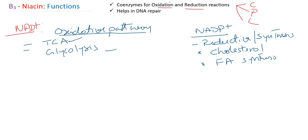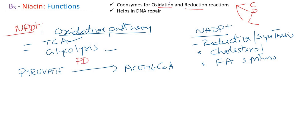To give a specific example of niacin's functions — we already discussed this example with thiamine and riboflavin. Pyruvate is converted to Acetyl Coenzyme A by the enzyme pyruvate dehydrogenase complex. In this reaction, NAD+ is utilized; it accepts one hydrogen and one electron and is converted to NADH + H+.